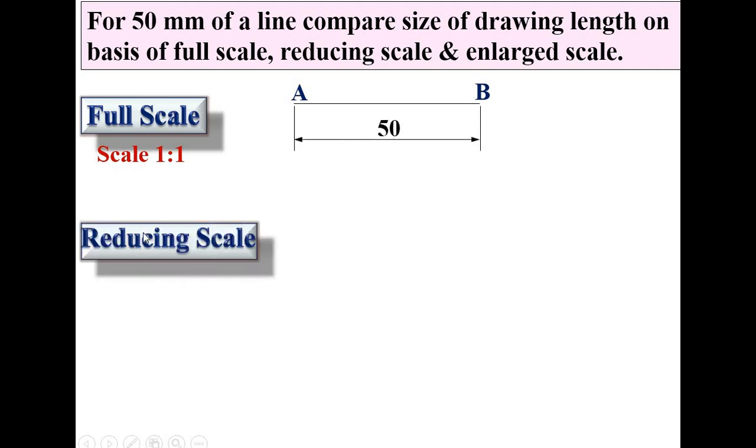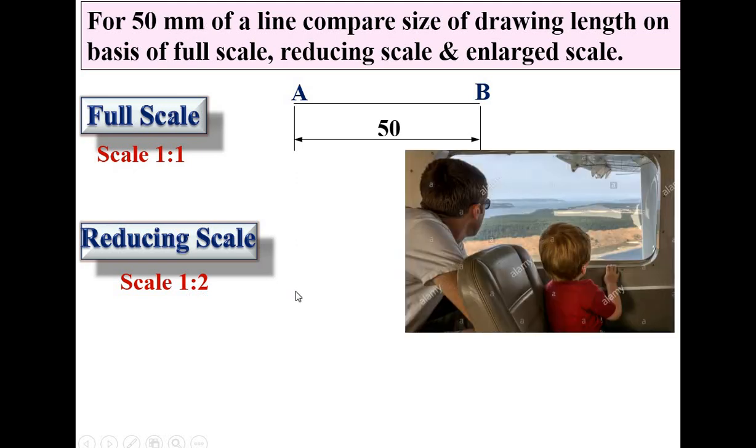Now reducing scale. Reducing scale means your drawing size is little bit reduced compared to the original length or the true length of the line. For that you can say scale 1 is to 2, means the drawing size is half of the original size. In another word, if you are far away from the original object, then your object size will be little bit reduced. That is only for the explanation, don't draw the figure in the examination.